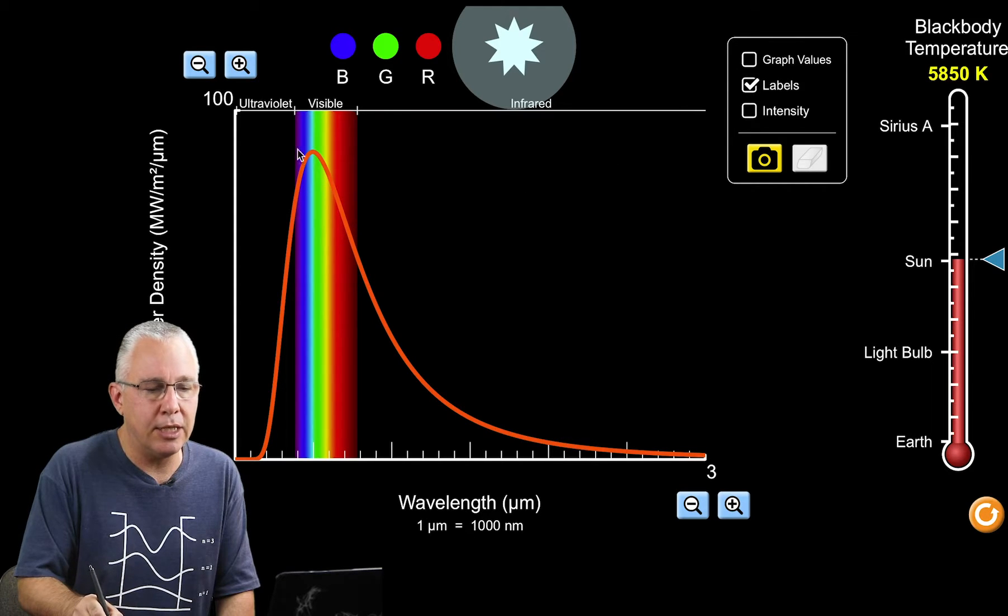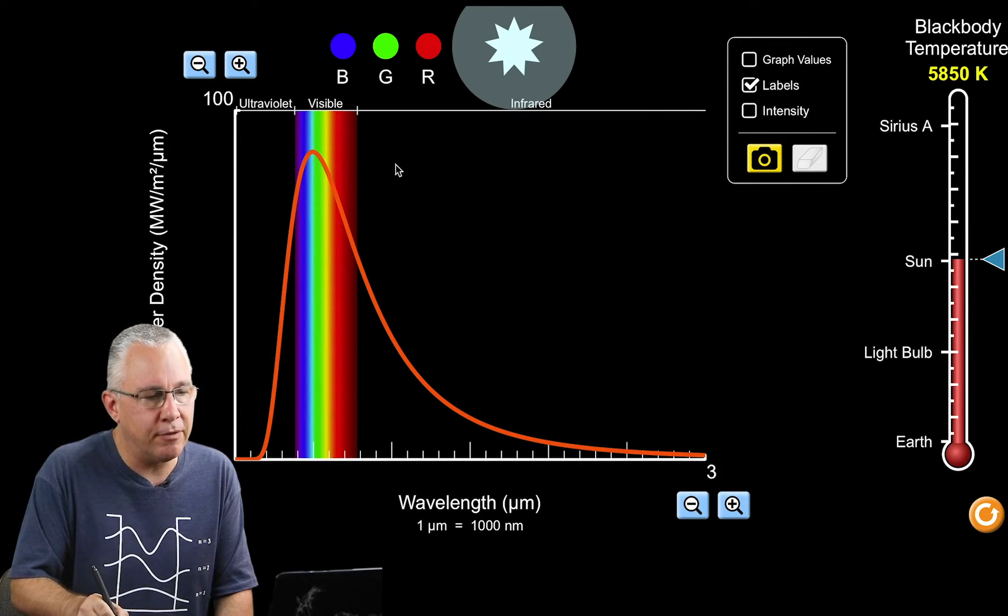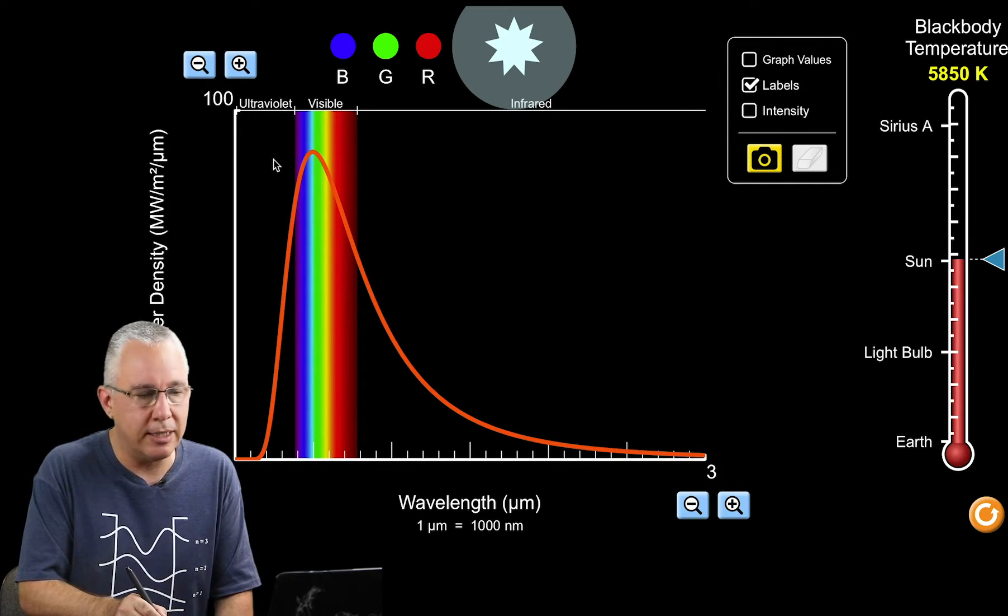Let's explore the parts of this graph. We're going to add our labels and you'll see we have the visible spectrum, the infrared range, and at the other end the ultraviolet section.